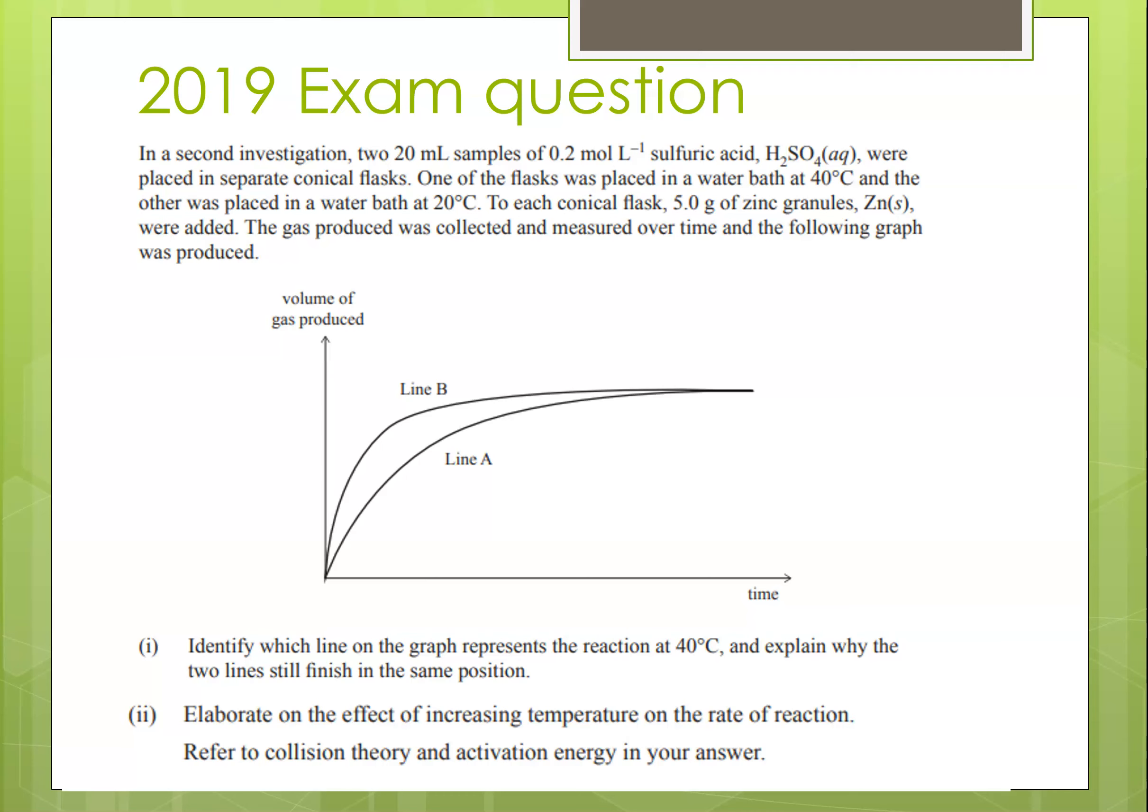So we've got two lines, line A and line B. The question asks you to identify which line on the graph represents 40 degrees, and explain why they finish at the same position. So line B here is obviously your 40 degree line, and line A here has got to be your 20 degree line. Why do they finish at the same point? Because they've got exactly the same amount of reactants. They've both got 20 ml of 0.2 mol per litre sulfuric acid, and they've both got 5 grams of zinc. Therefore, we've got exactly the same number of particles in there, so we're going to get exactly the same number of product particles formed. It's just that the 40 degree one's going to get there much faster than the 20 degree one.